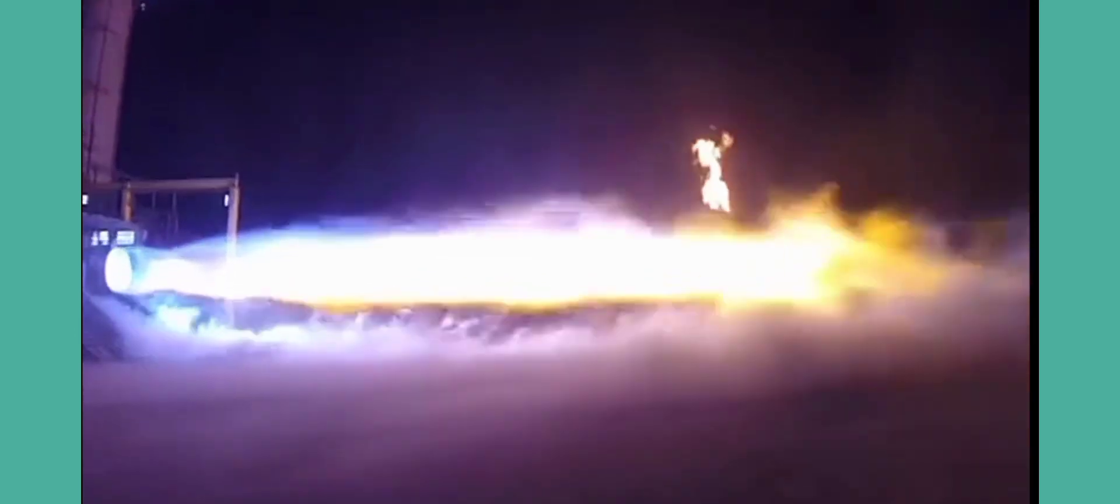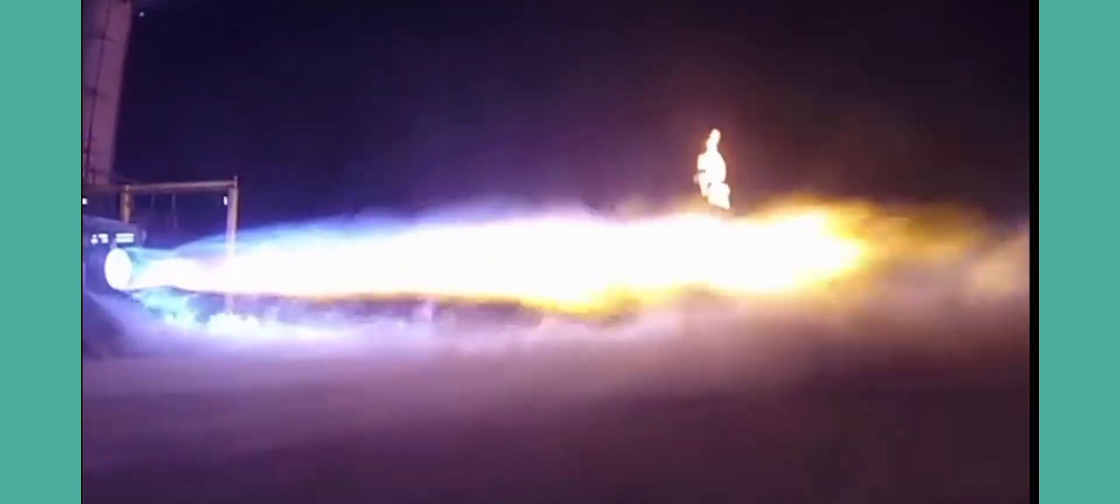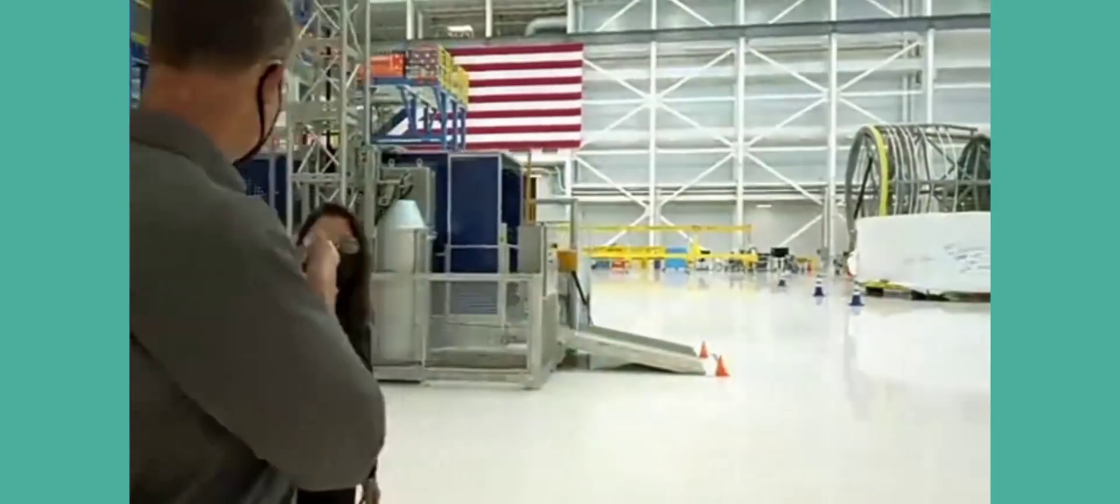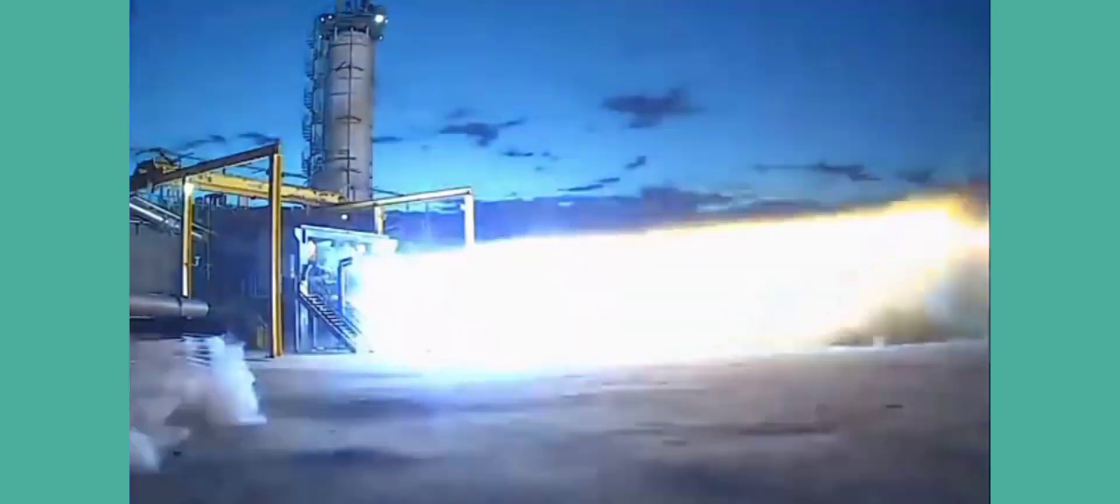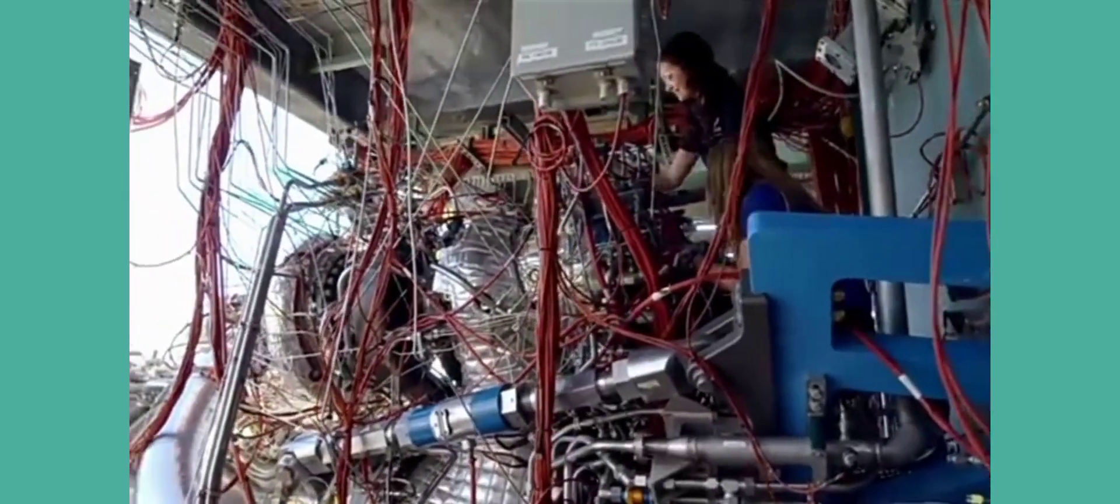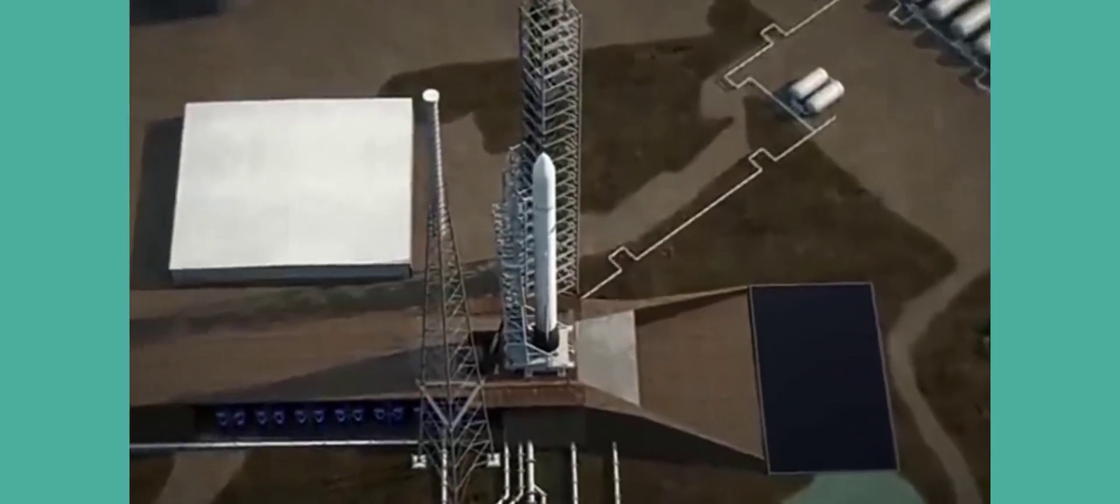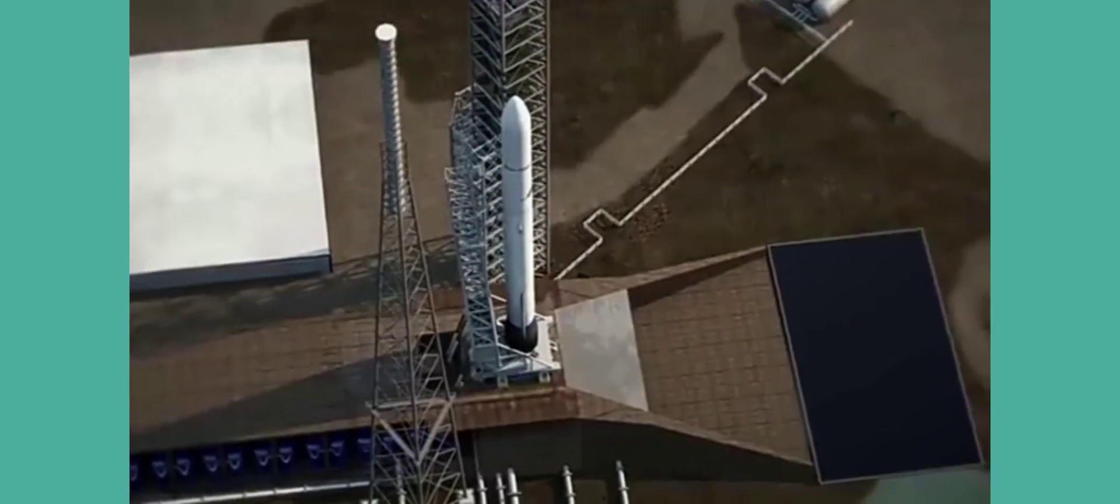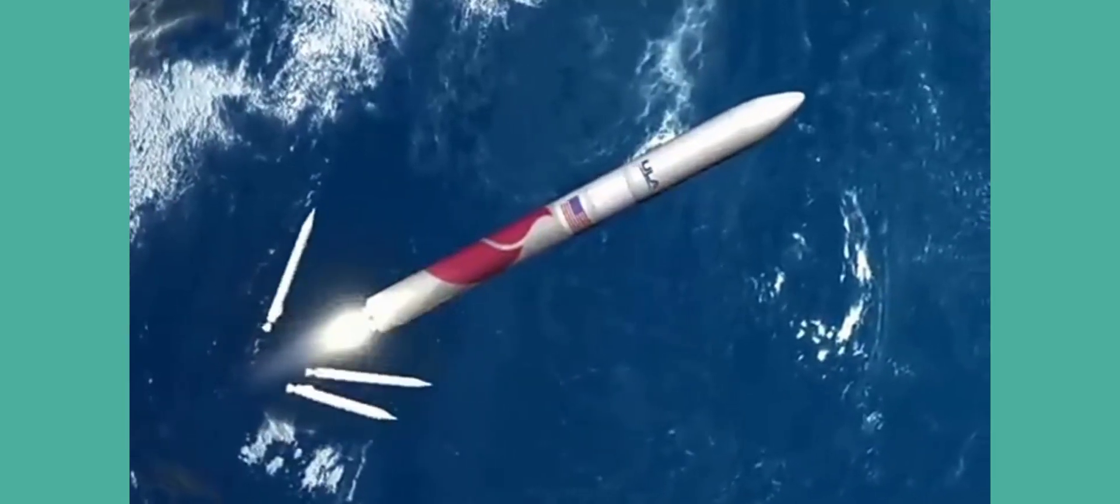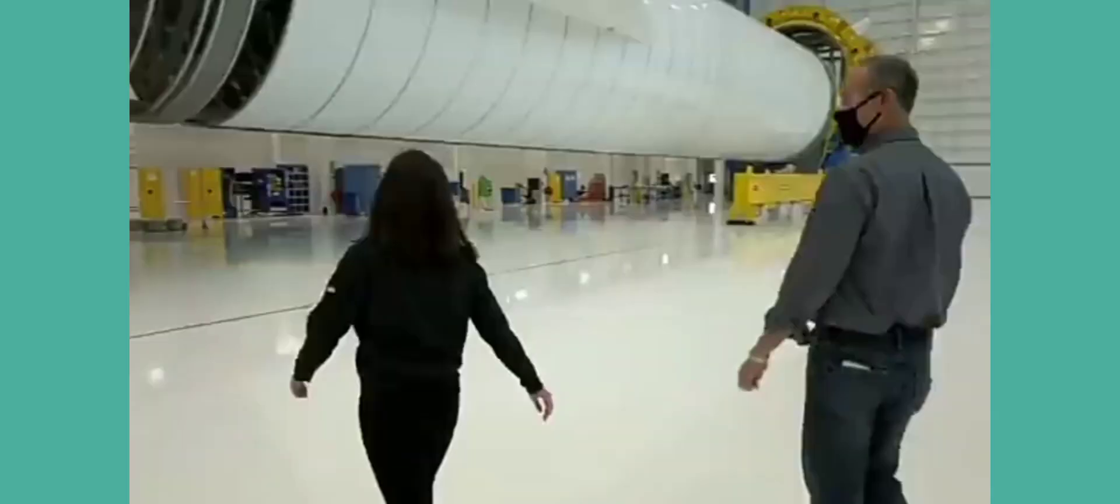Used in Vulcan Centaur and New Glenn. It was initially planned for the engine to be used exclusively on a Blue Origin proprietary launch vehicle, New Glenn, the company's first orbital rocket. However, it was announced in 2014 that the engine would also be used on the United Launch Alliance (ULA) Vulcan Centaur launch vehicle, the successor to the Atlas V launch vehicle.